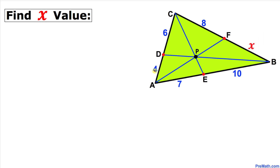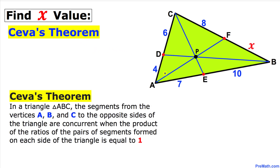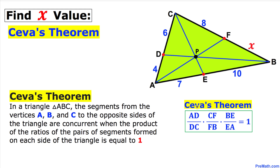Let's get started with the solution. We are going to solve this problem using a very powerful tool called Ceva's Theorem. In a triangle ABC, the line segments from the vertices A, B, and C to the opposite sides of the triangle are concurrent — meaning they pass through the very same point, in our case P — when the product of the ratios of the pair of segments formed on each side of the triangle is equal to 1. Here's the Ceva's Theorem formula.